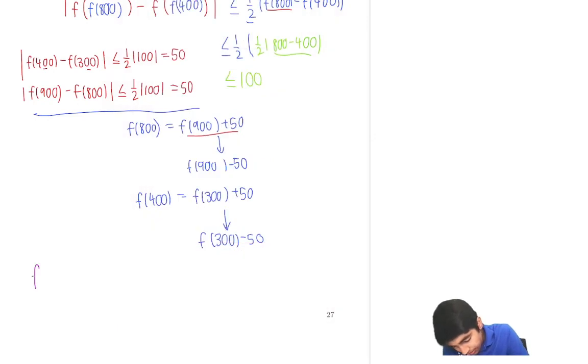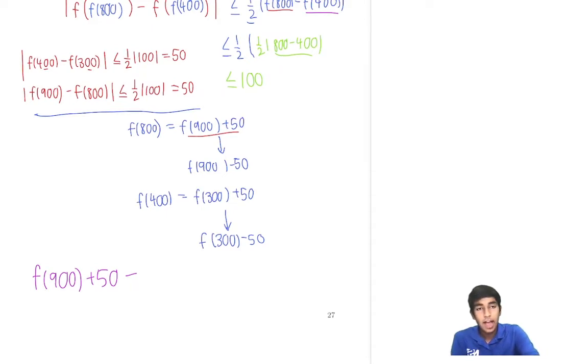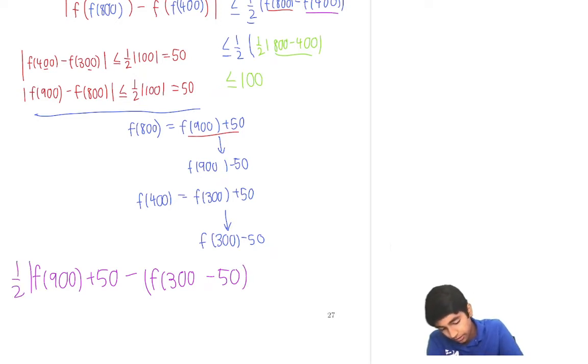f(900) plus 50 minus, and we want to minimize f(400) because we're subtracting it. So at the smallest, f(400) can be f(300) minus 50. Right? And then we take half the absolute value of this.